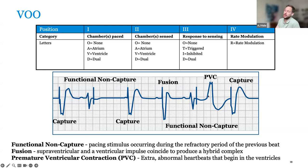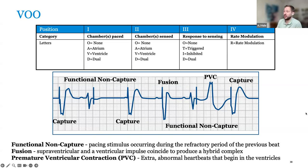Keep in mind VOO can be pro-rhythmic — if you pace at the wrong time you can induce an arrhythmia. So you don't want to leave a patient set VOO long-term. Typically when pacing asynchronously, you want to pace above the intrinsic rate. If a patient is going into surgery, I'll set them VOO 85 or 90 if their underlying rhythm is around 60, to reduce the instance of pacing into an intrinsic event and to suppress PVCs.